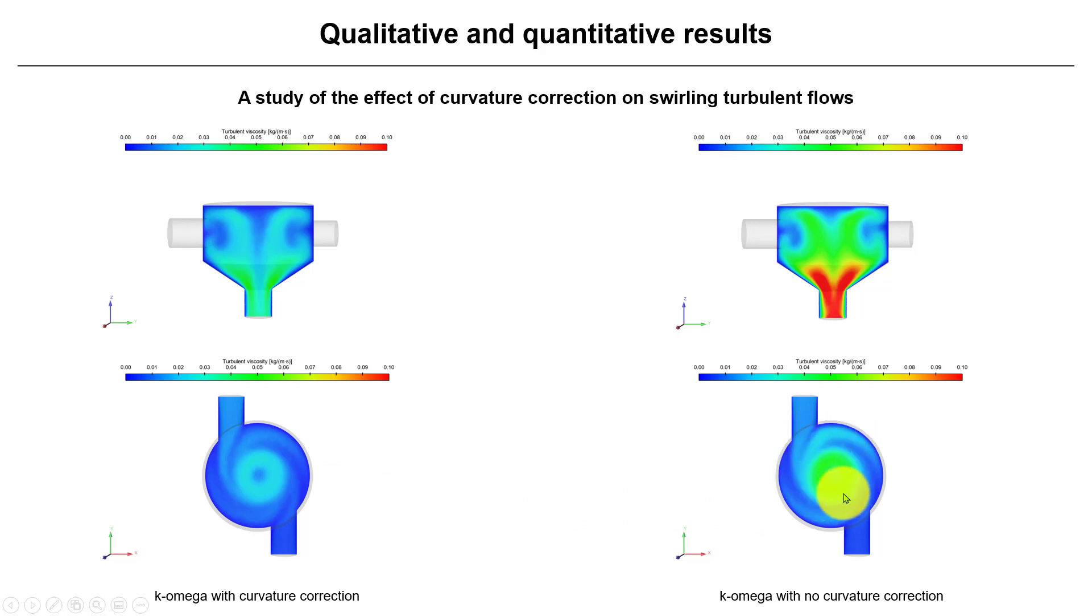You will see in the standard K-epsilon model that probably the turbulent viscosity values are lower, but you will see that in the core, in the center, you will have large values, which is not physically realistic. So here we can appreciate better the influence of this correction on the system rotation.